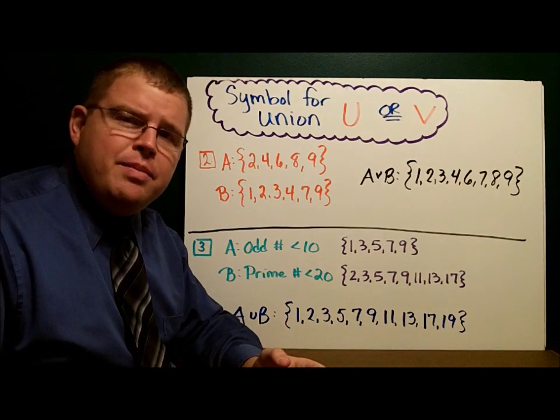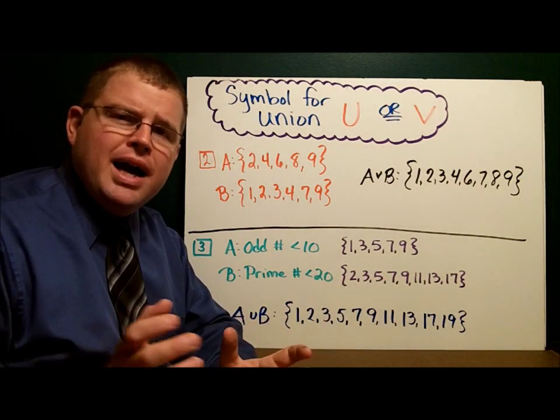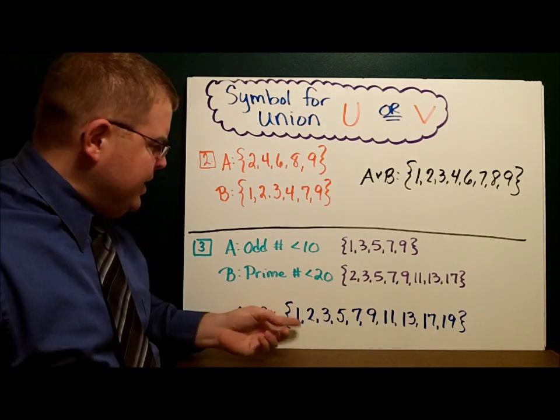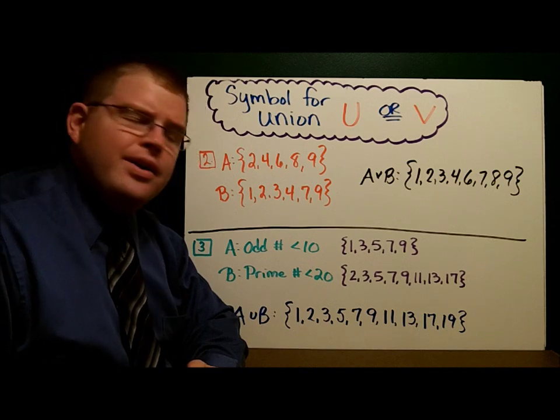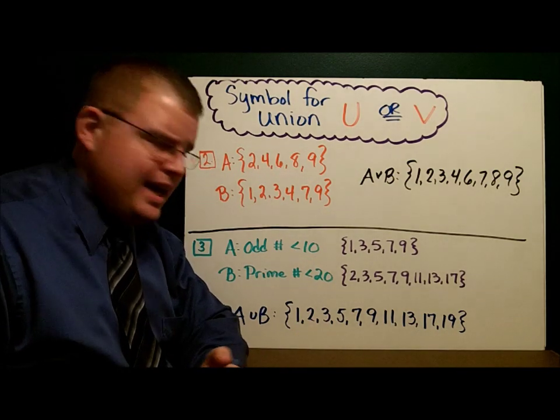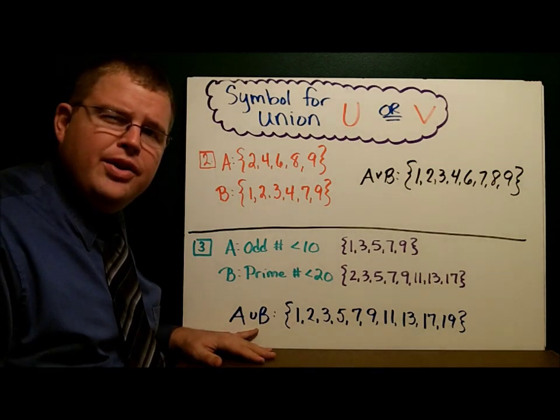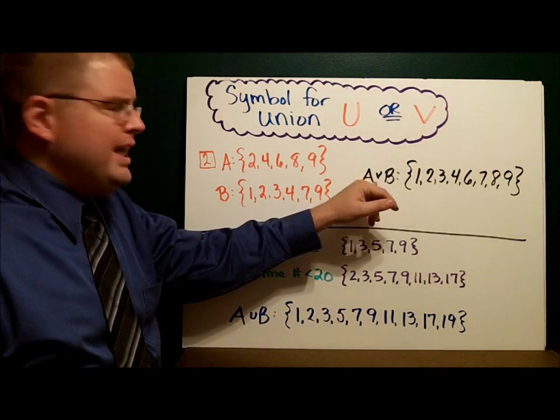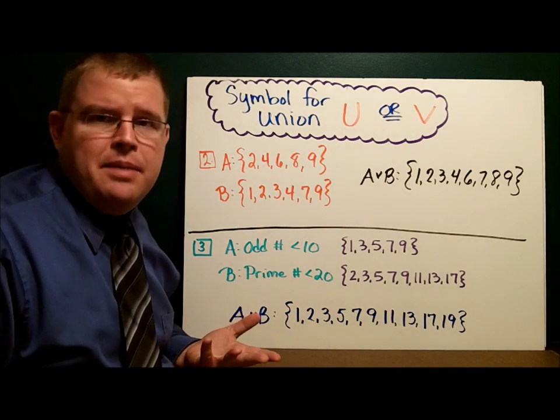A union B, bring them together like the union of states. We're going to combine those two sets. A union B: 1, 2, 3, 5, 7, 9, 11, 13, 17, and 19. Notice here I've used the notation with the little u. Here I use the notation with the little v. They're synonymous. They really mean the same thing.